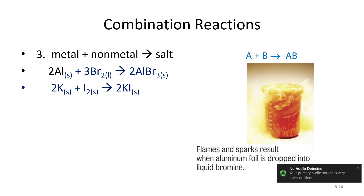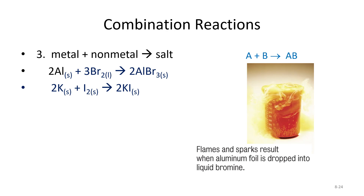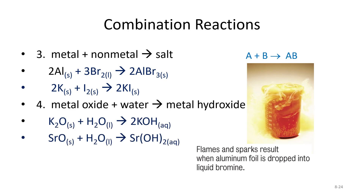More combination reaction examples: A plus B gives AB. A metal plus a nonmetal gives a salt — aluminum plus bromine gives aluminum bromide, potassium plus iodine gives potassium iodide. Also, metal oxides plus water gives a metal hydroxide: potassium oxide plus water gives potassium hydroxide, and strontium oxide plus water gives strontium hydroxide.